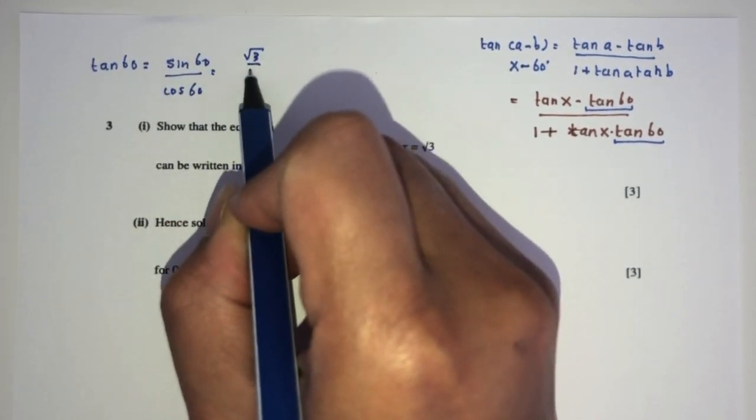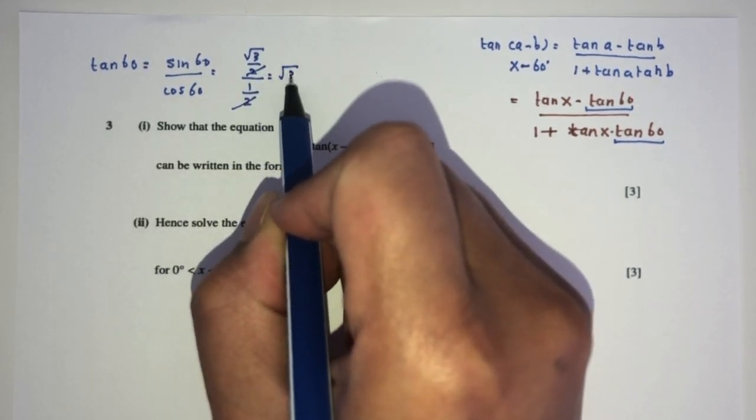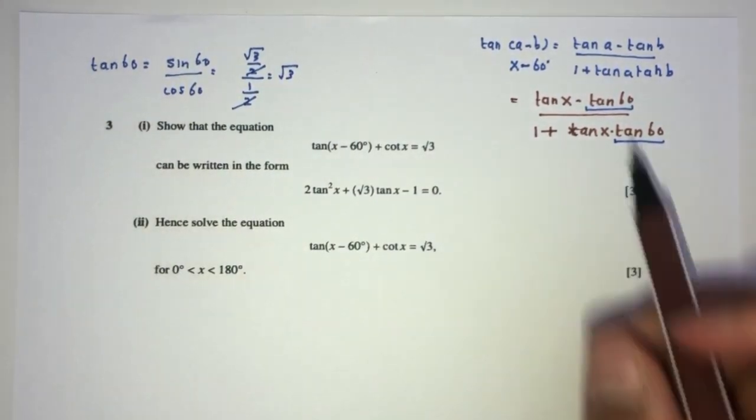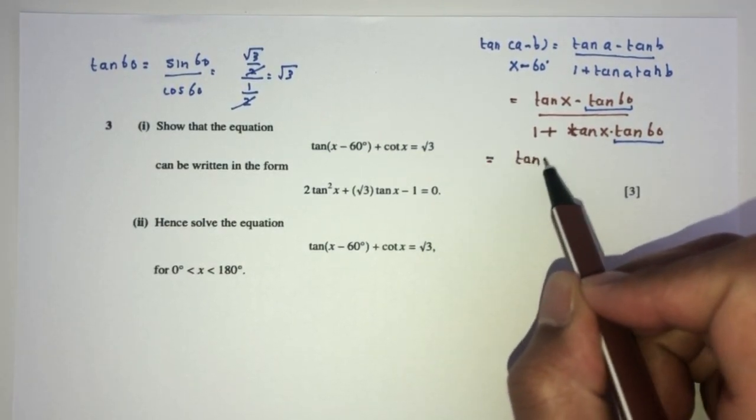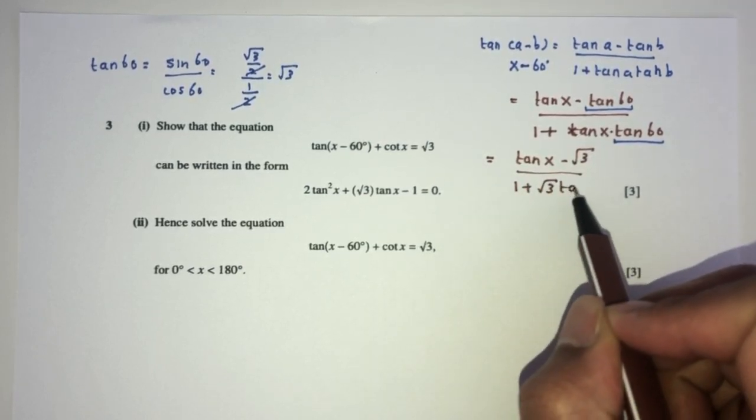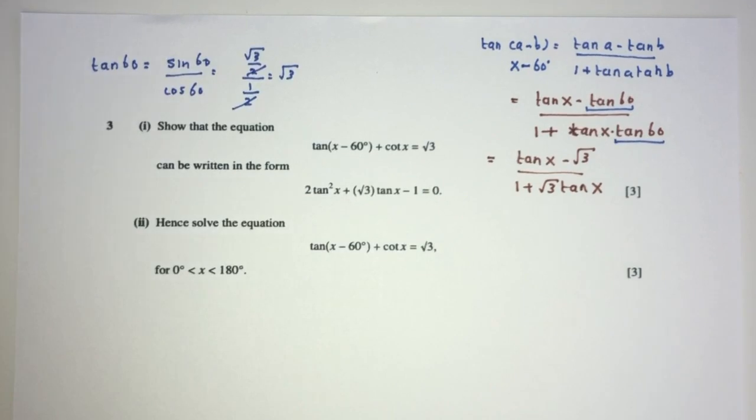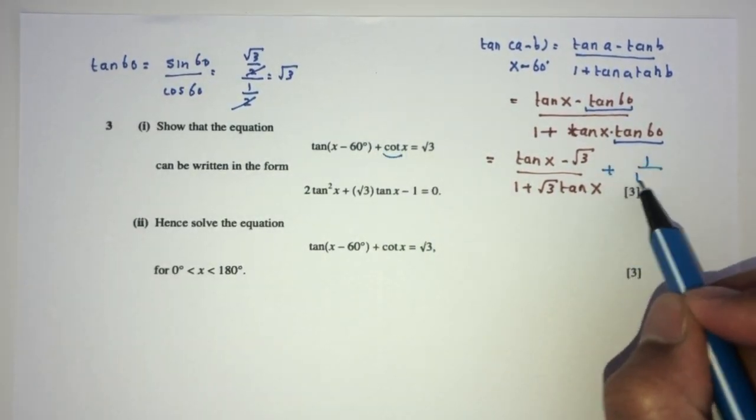Cancel, cancel, half, root 3. So tan of 60 will be root 3. So you eventually will realize this whole thing becomes tan of x minus root 3 over 1 plus root 3 tan of x. Now simplify, here we have also cot x, cot x is 1 over tan x.